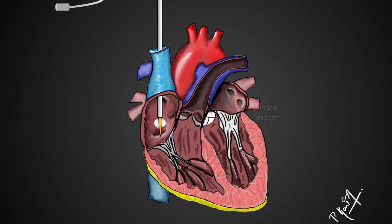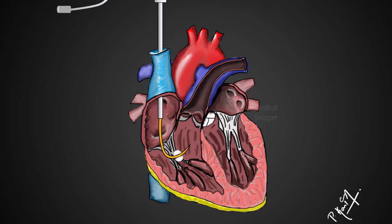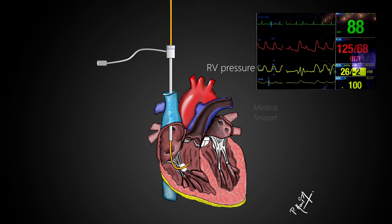When pushed further, it reaches the right ventricle. The systolic pressure increases to about 25 mmHg, and diastolic pressure remains the same as the right atrial diastolic pressure.